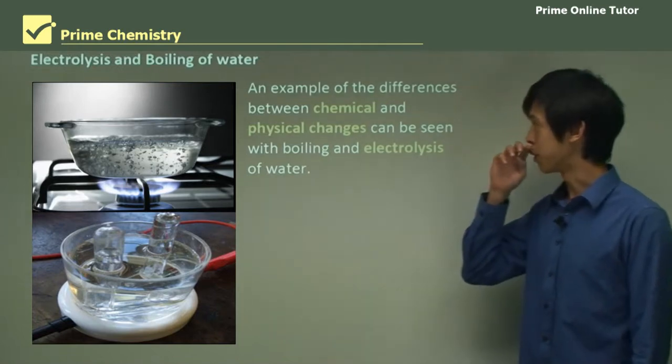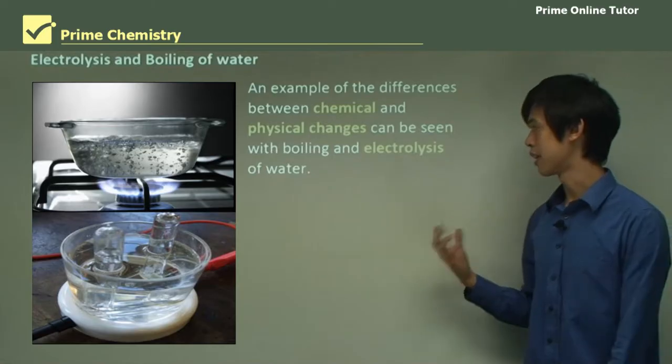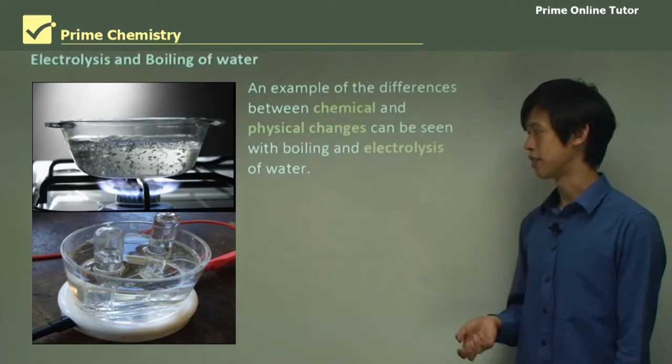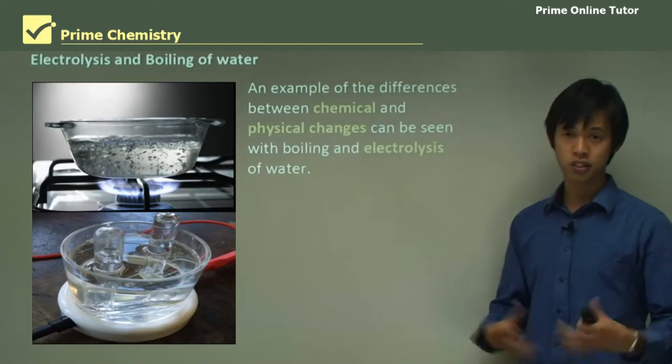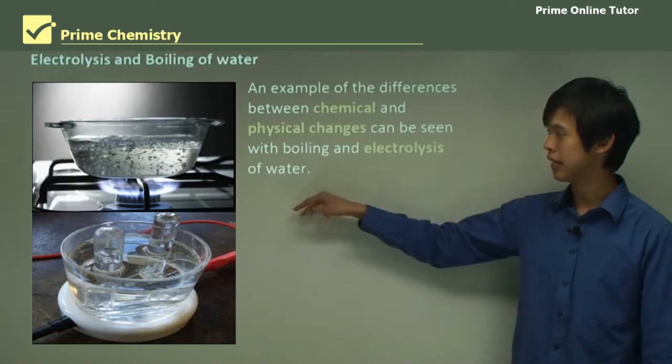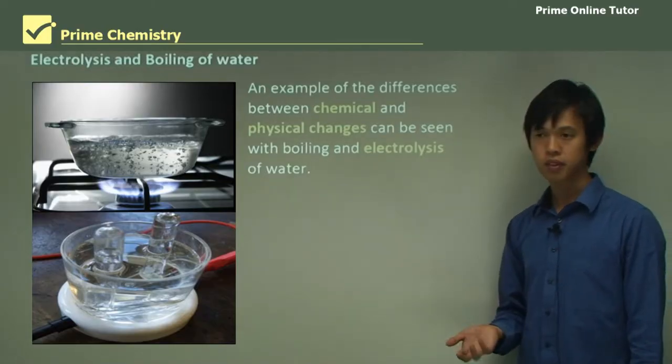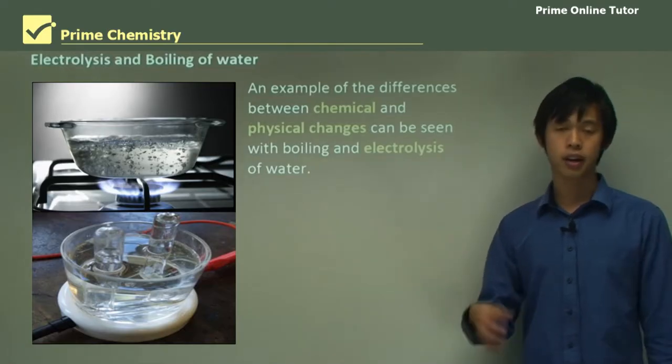So electrolysis and boiling of water. An example of the differences between chemical and physical changes can be seen with boiling and electrolysis of water. We've all seen boiling of water, and hopefully by now you've all seen the electrolysis of water. It's an example of what the differences are between a chemical and a physical change.